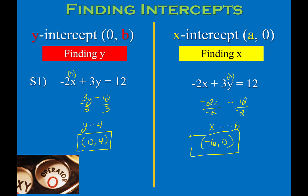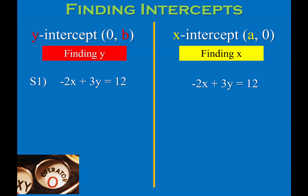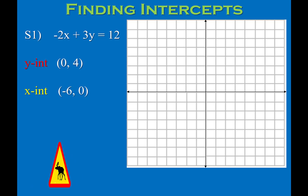Here are the x and y intercepts for the practice problem. To find the y-intercept, substitute 0 for x; solving for y gives y = 4, so the y-intercept is (0, 4). For the x-intercept, substitute 0 for y; solving for x gives x = −6, so the x-intercept is (−6, 0). Then graph those two points, making sure the y-intercept is on the y-axis and the x-intercept is on the x-axis, and draw a line between them.